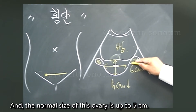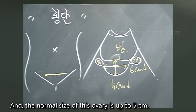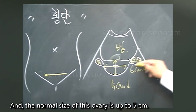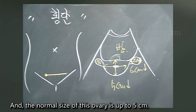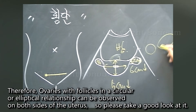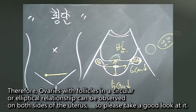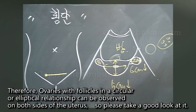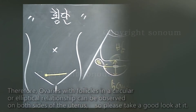The normal size of the ovary is up to 5 cm. Ovaries with follicles in a circular or elliptical shape can be observed on both sides of the uterus, so please take a good look at them.